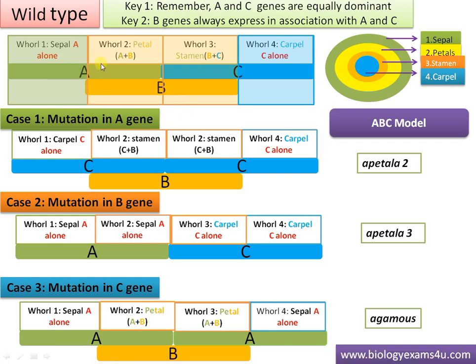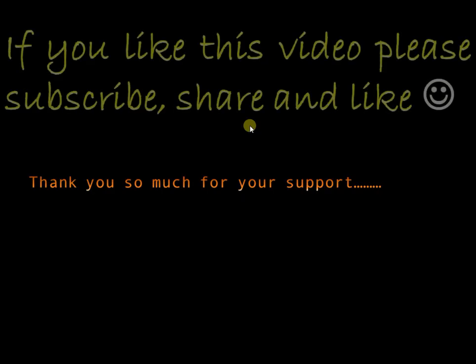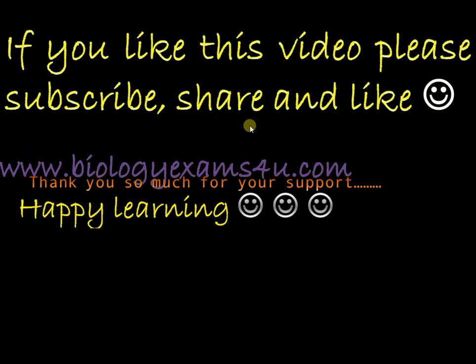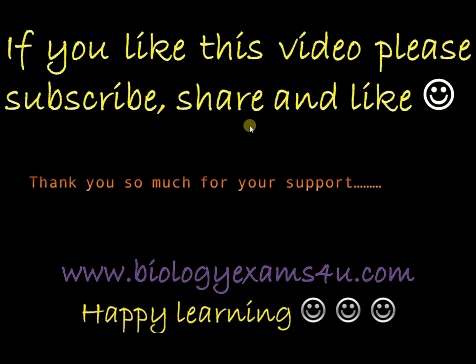In summary, three classes of genes are involved in the formation of four whorls of a flower: A gene alone forms sepal, A plus B forms petal, B plus C forms stamen, and C alone forms carpel. Thank you for watching, please share, subscribe, and like. You are with Biology Exams for You dot com.